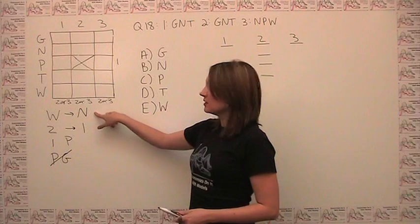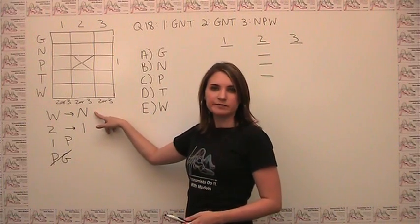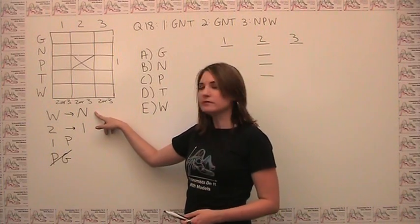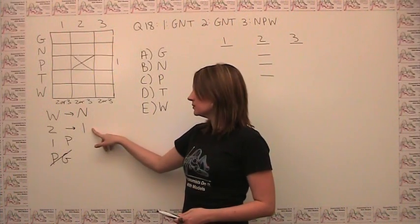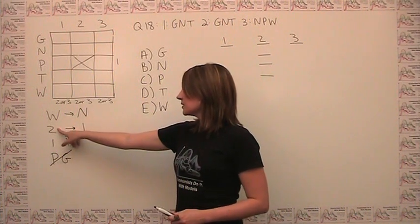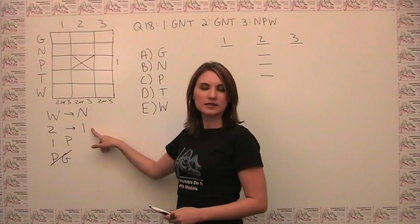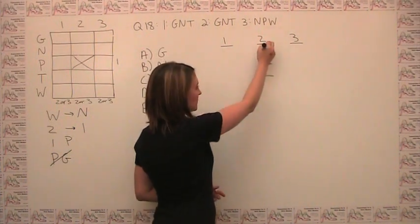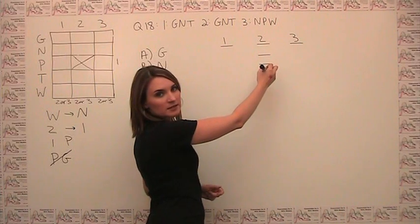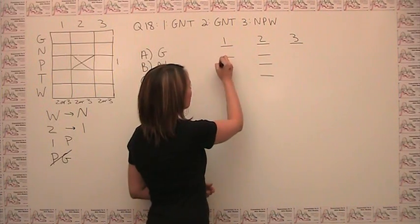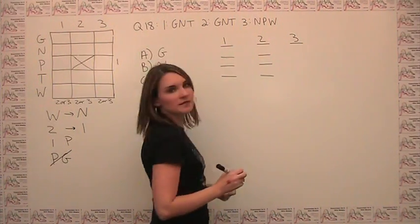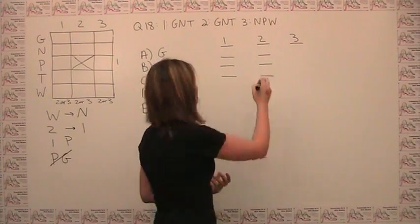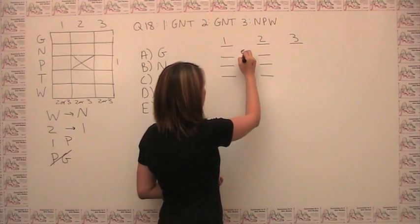And then we can ask ourselves where do we go from there and what else can we do? The first rule here says every time you see wood, you have to see newsprint. I don't know what to do with that yet, so I'll look to the next rule. So everything that is at center 2 has to be at center 1. So that says that if there are three kinds of material at center 2, there have to also be three kinds of material at center 1. And then we have this type of relationship here.